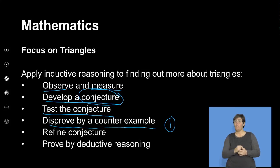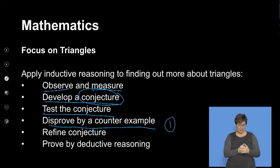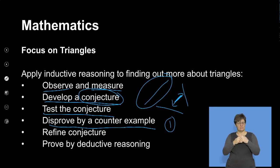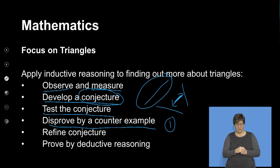You disprove by a counter example, and you only need one thing to disprove what you've been claiming. For example, if I have three lines and one is longer than the sum of the other two, then they will not form a triangle. That's one statement we can make to disprove that a triangle is formed by any three lines, because some people say that — so just one thing is enough to disprove it.